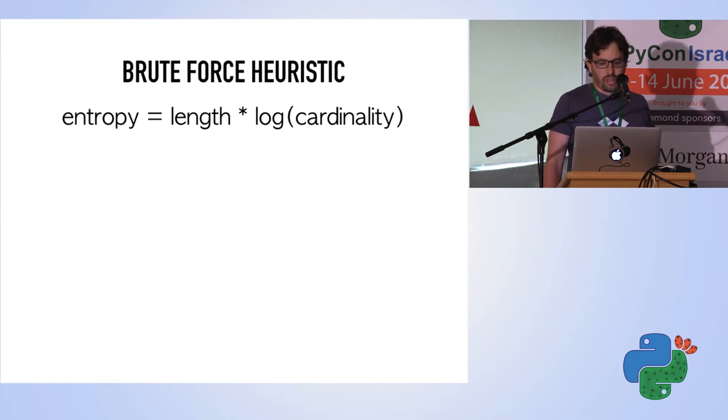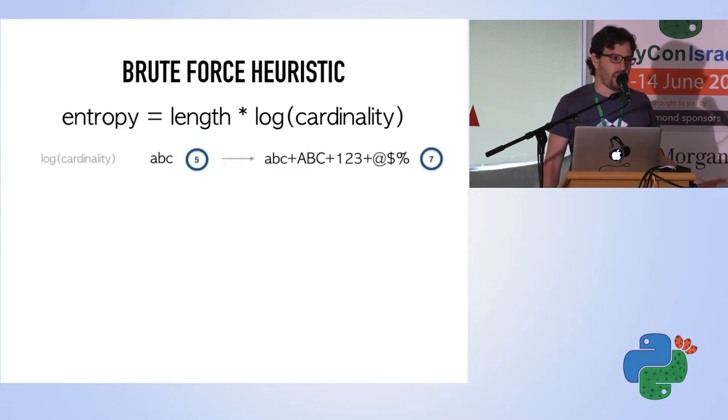Cardinality is basically the number of signs within a range. For example, if we have lowercase English letters, we have 26 signs, and the log of that rounded up is 5. If we use lower and upper case, numbers, and special characters, the log of this cardinality would be 7.